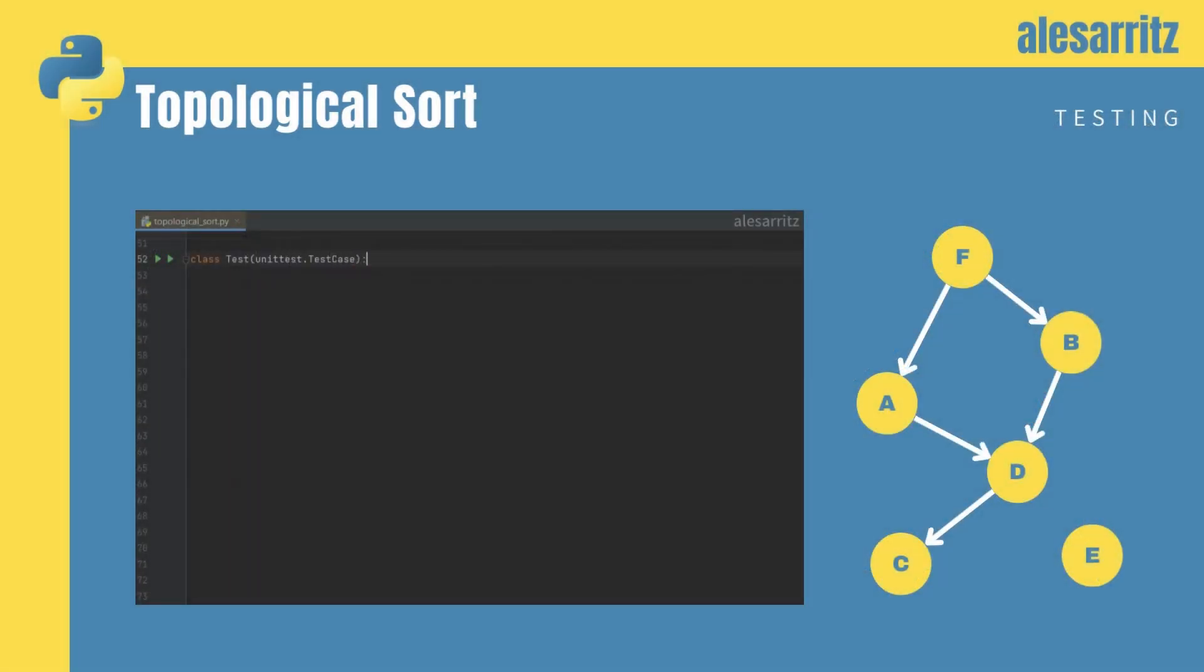Now that we completed the implementation, we will test our algorithm on two graphs. For the first, we'll create the graph from the previous example, which has no cycle in it.